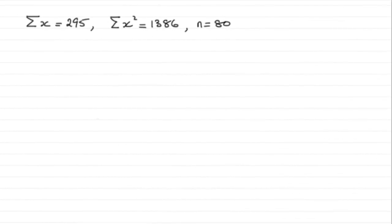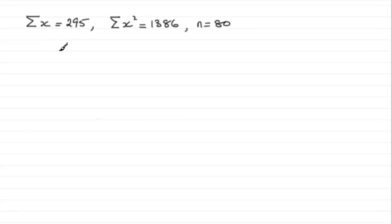For this part of the question, we're given the summary statistics where n is 80, and we've got to work out the mean and the variance of the number of daisies per square for the 80 squares, giving our answers to two decimal places. So to start off with, we've got to work out the mean.